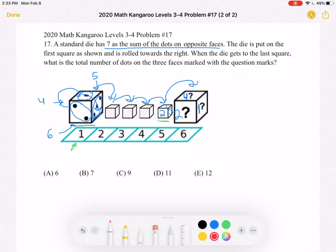So now let's remind ourselves what the question's asking for. We want to know the total number of dots on the three faces marked with the question marks. So that's 1, 2, 4, which is a sum of 7. And that's answer choice B.